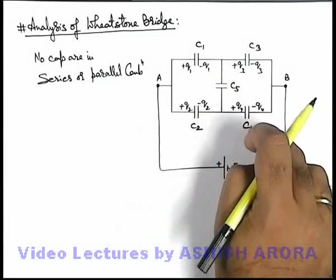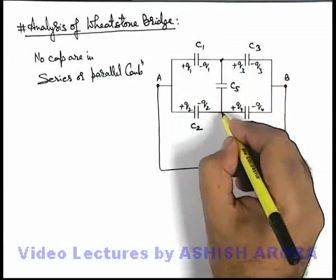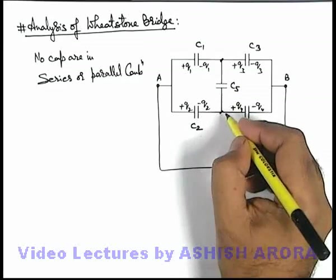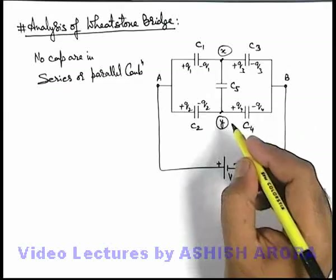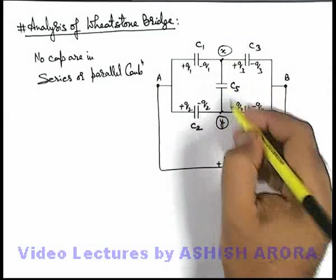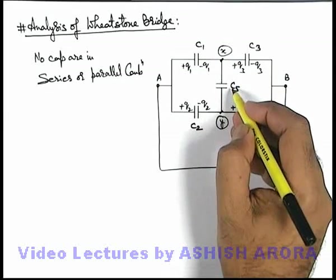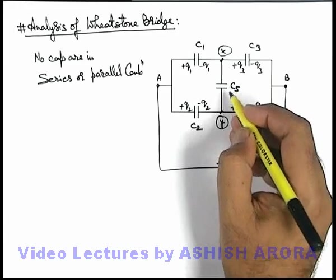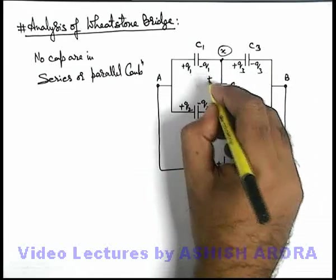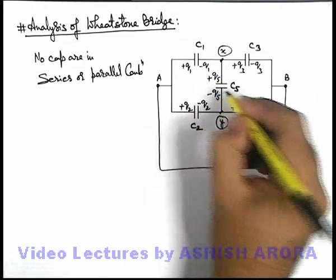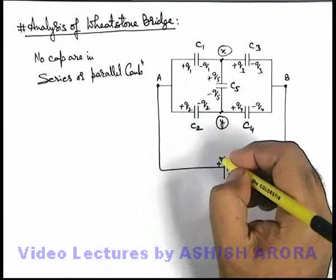And due to supply of charges there will be some potentials developed on these junctions or nodes. Say potential here is X and potential here is Y. Depending on which one is higher, one plate of capacitor C5 will be positively charged and the other will be negatively charged. Here let us consider this charge is plus Q5 this minus Q5, after analysis we'll get the exact polarity.